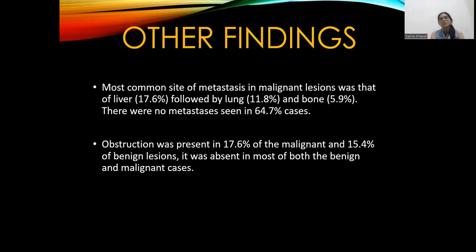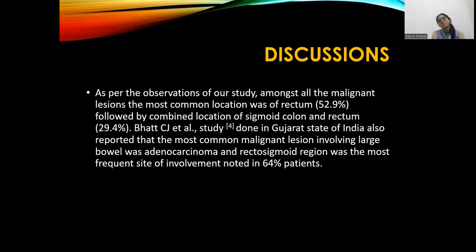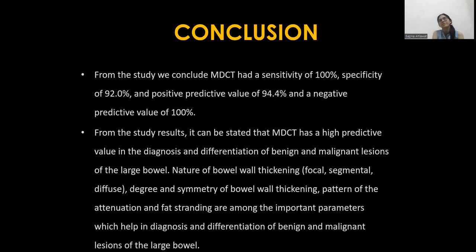The most common site of metastasis in malignant lesions was the liver, seen in 17.6% of cases, followed by lung and bone. No metastasis was seen in 64.7% of cases. Bowel obstruction was present in 17.6% of malignant cases and in 15.4% of benign lesion cases, and was absent in most cases overall. Comparing with the literature, CJ et al., in a study done in Gujarat, India, also reported that the most common malignant large bowel lesion was adenocarcinoma, and the rectosigmoid was the most frequent site, noted in 64% of patients.